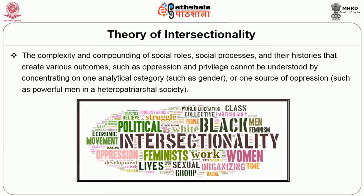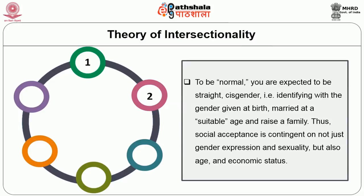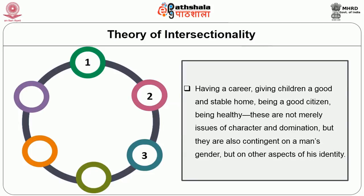Patriarchy in a heteronormative society, sometimes known as heteropatriarchy, is a hierarchical order that accepts and rewards people's gender expression, identity and sexual orientation. To be normal, you are expected to be straight, cisgender — that is, identifying with the gender given at birth — married at a suitable age, and raise a family. Social acceptance is contingent on not just gender expression and sexuality but also age and economic status. Having a career, giving children a good home, being a good citizen — these are also contingent on other aspects of one's identity.